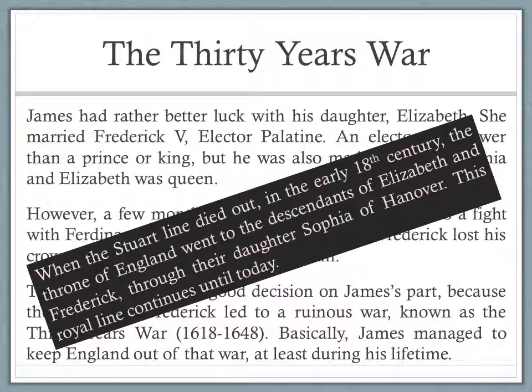When the Stuart line died out, it was Frederick and Elizabeth's line — that branch of the family — that carried on and took on the throne about a hundred years later. Just as they went to Scotland to get the king because of Henry VIII's sister's marriage to the King of Scotland, because of Elizabeth's marriage, it was Charles's sister's marriage to Frederick of Hanover that mattered. When the Stuarts died out, they went to Germany and got the Hanover family — and that's the same family we have today; Queen Elizabeth II is from that family.